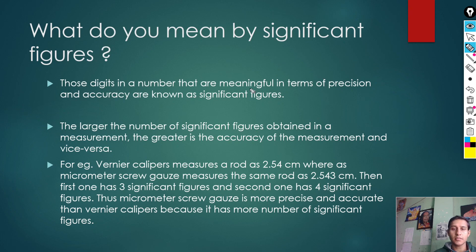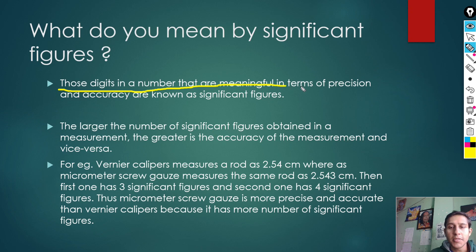Those digits in a number that are meaningful in terms of precision and accuracy are known as significant figures. So 1.000 cm has 4 significant figures, making it the most accurate of the three readings.